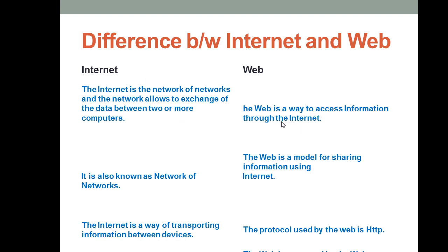So what do you mean by the web? The web is a way to access information throughout the internet. With the help of the web, you can access information through the internet. If you don't have internet, you cannot access, retrieve, download, copy, or even view the information.